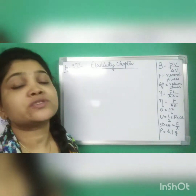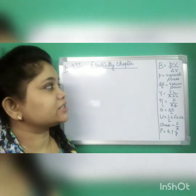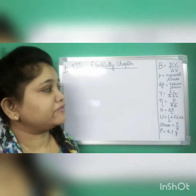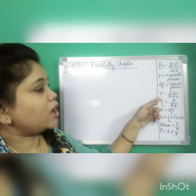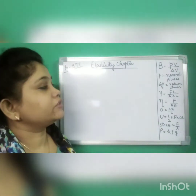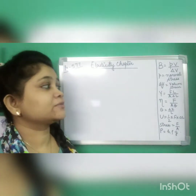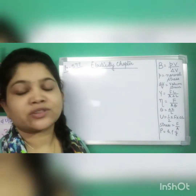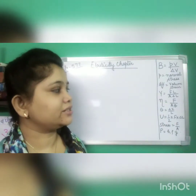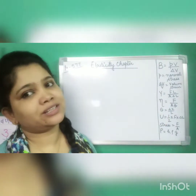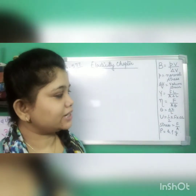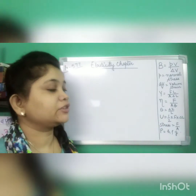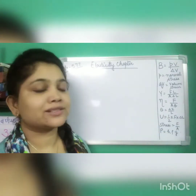Before starting the sums, let's review the formulas. Bulk modulus B = PV/ΔV, where P is the normal stress or pressure and ΔV/V is the volume strain. Young's modulus Y = FL/(A·ΔL), which is force times original length divided by area times change in length. Modulus of rigidity η = F/(A·θ), where θ = ΔX/L is the shearing strain. Work done or potential energy U = ½·F·ΔL, where F is the force and ΔL is the change in length.